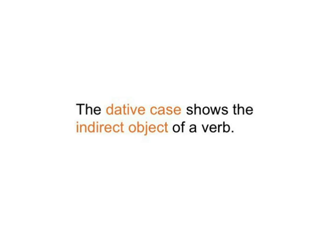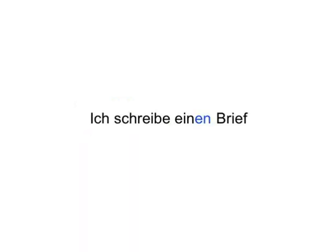Well, if you write a letter, for example, the letter is the direct object of the activity of writing. I'm writing a letter — Ich schreibe einen Brief. But you usually don't write it just for the sake of writing. You write it in order to send to somebody. This somebody, the addressee, is the indirect object of what you do. The addressee benefits from the action of writing.